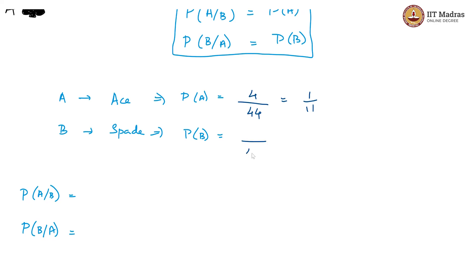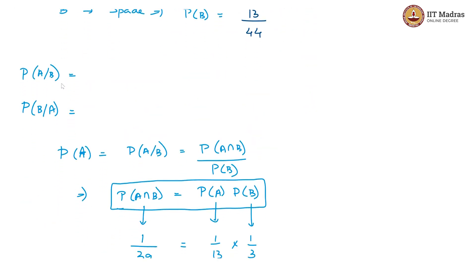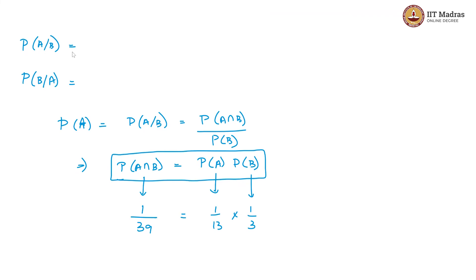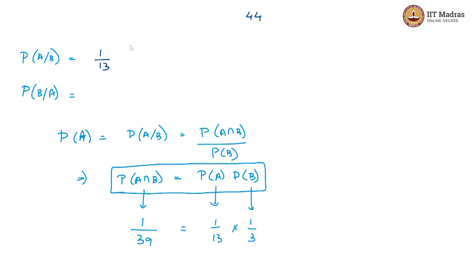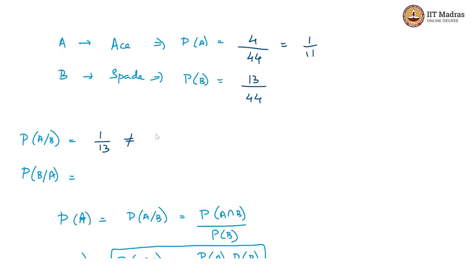What is P of B of these 44 cards? How many spades are there? 13. So 13 by 44 is P of B. Now let us see what happens with P of A given B. Given that the card is a spade, how many of them are an ace? That is 1 by 13. But 1 by 13 is not equal to P of A, which is 1 by 11. Likewise, P of B given A: if it is an ace, the probability that it is a spade is 1 by 4, because there are 4 aces and only 1 spade among them. And this is again not equal to P of B, which is 13 by 44.